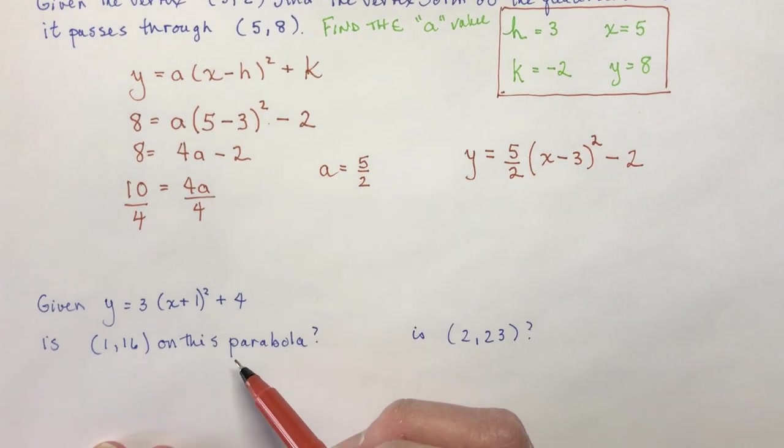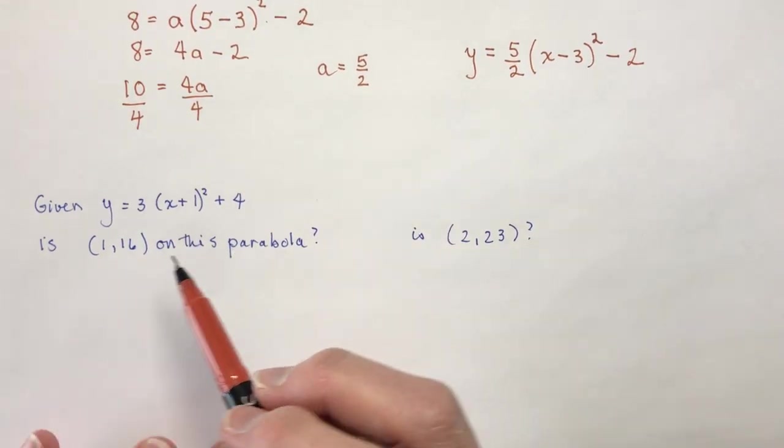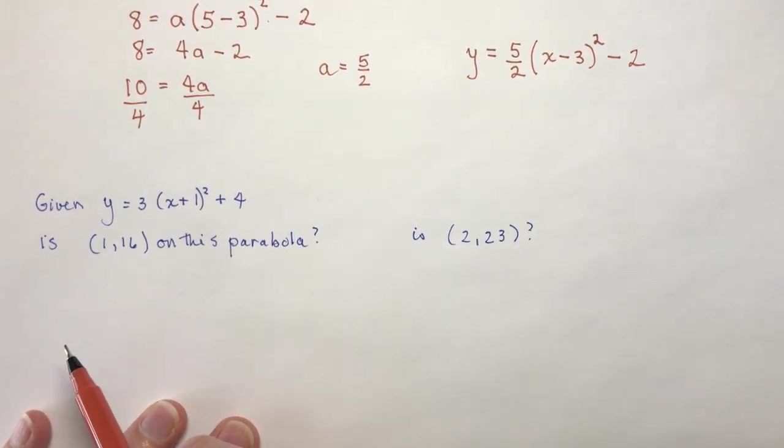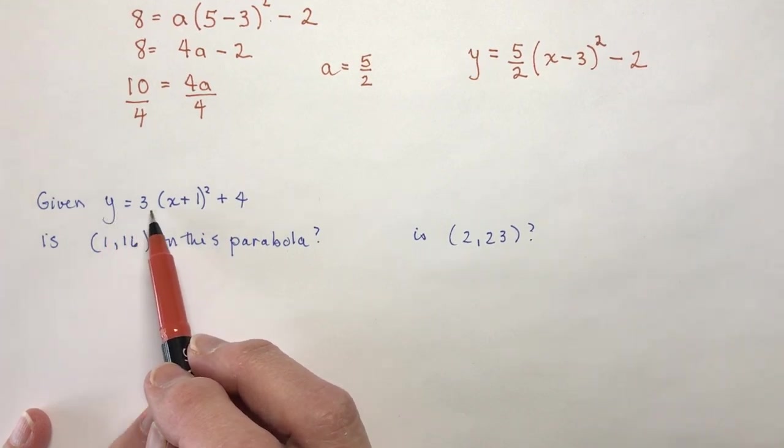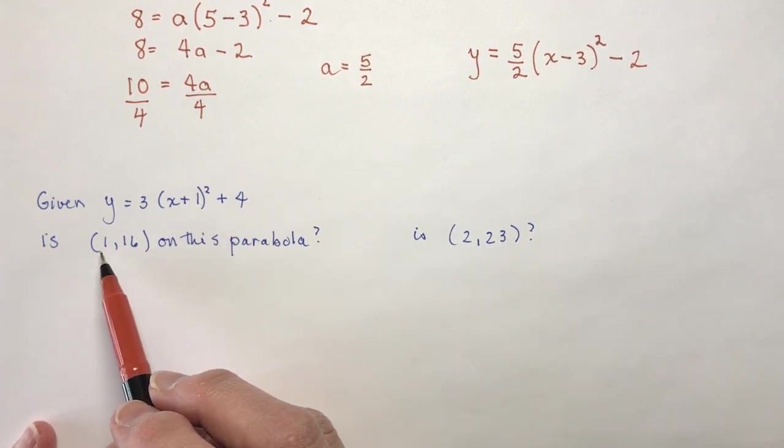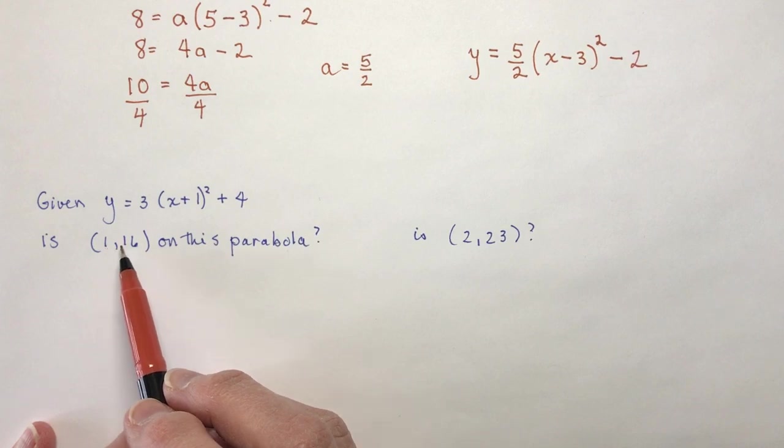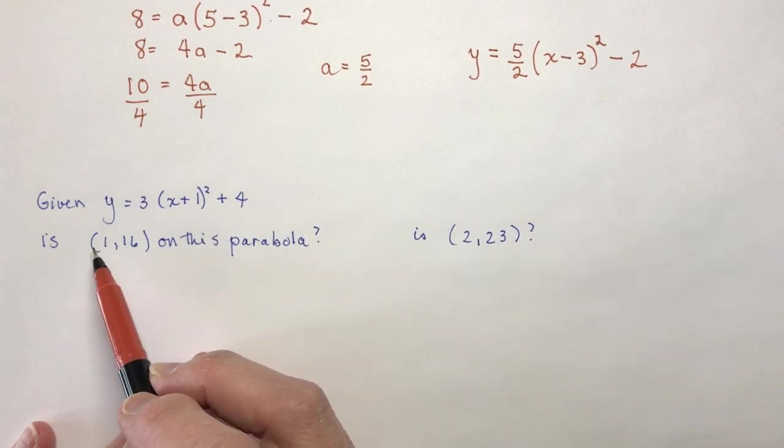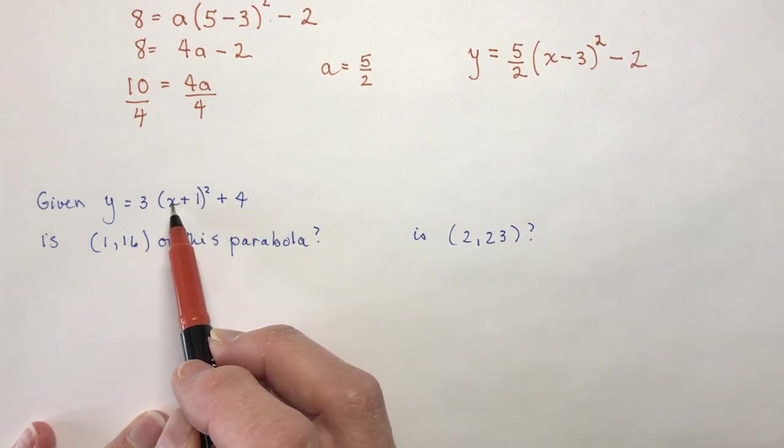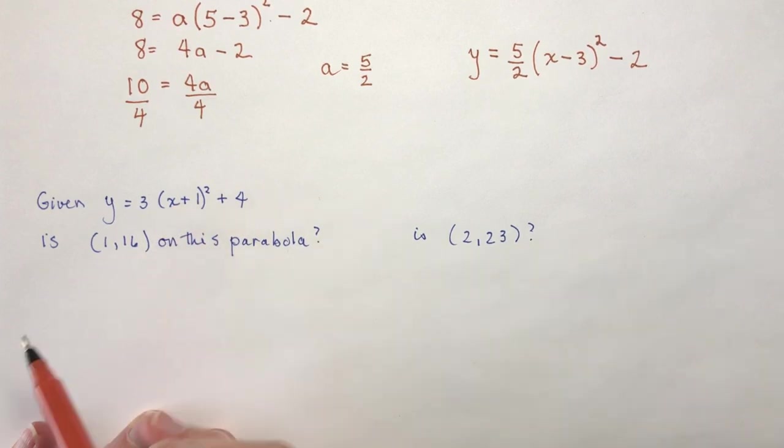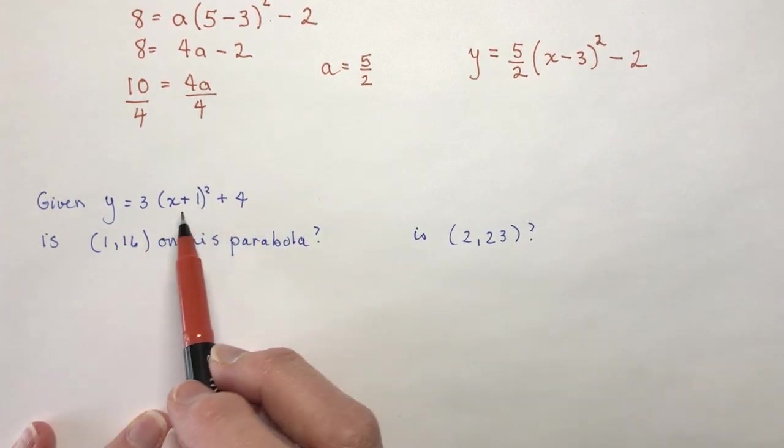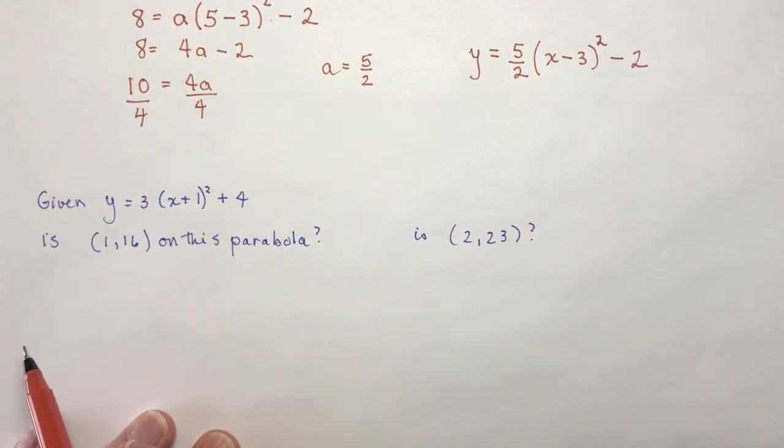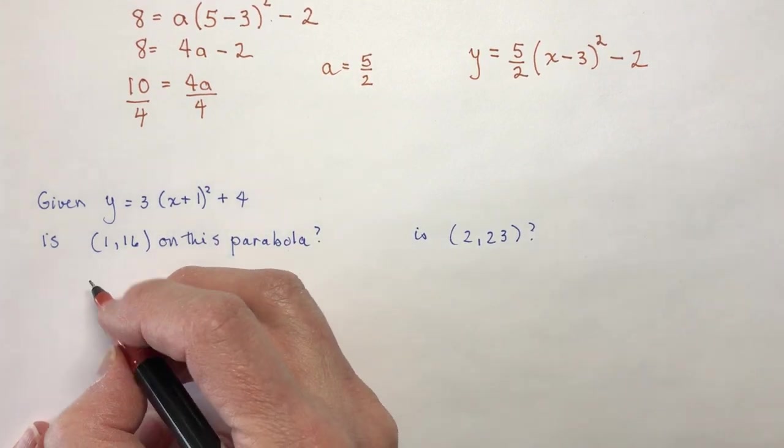And also you can find out whether or not, and that's my next question, whether or not a certain point is on the parabola. So given this equation here, you need to find out whether or not 1, 16 is on the parabola. So what does that mean? It means that if I plug in 1 for x, my height of the function should be 16. In other words, you're just plugging in x is 1 here and solving for y. And if you get 16, then it's going to be on the parabola. Okay, so that's what I'm going to do.